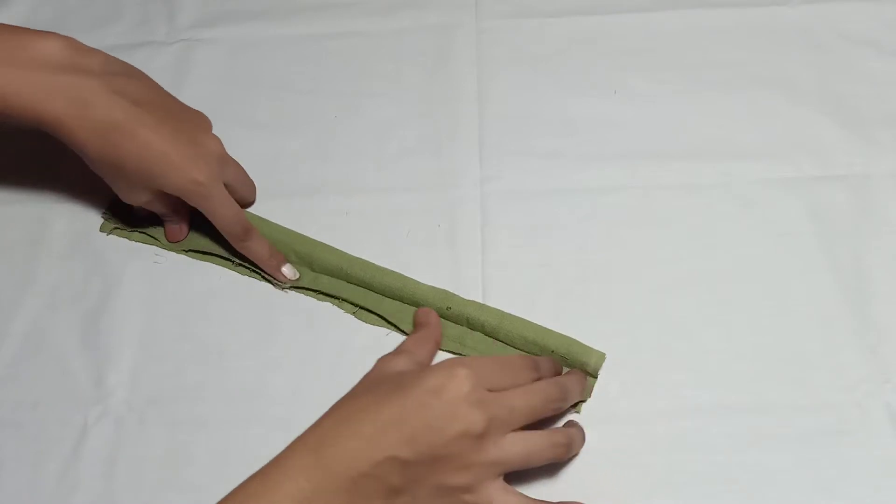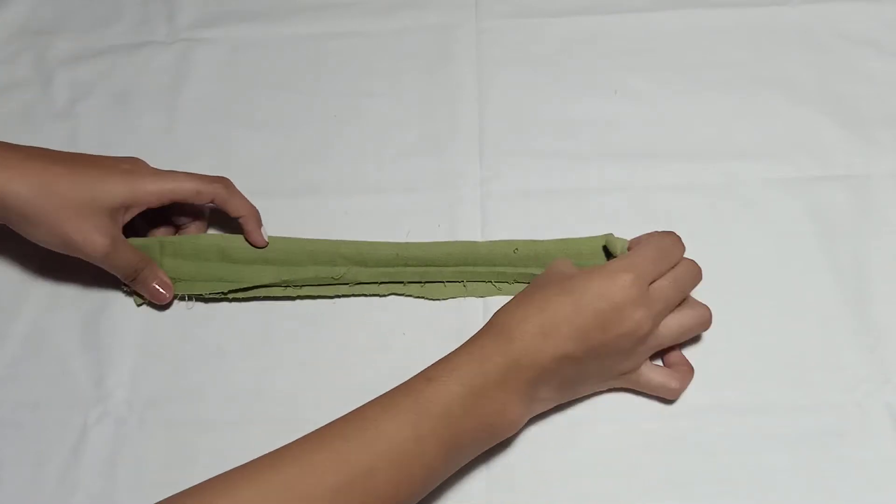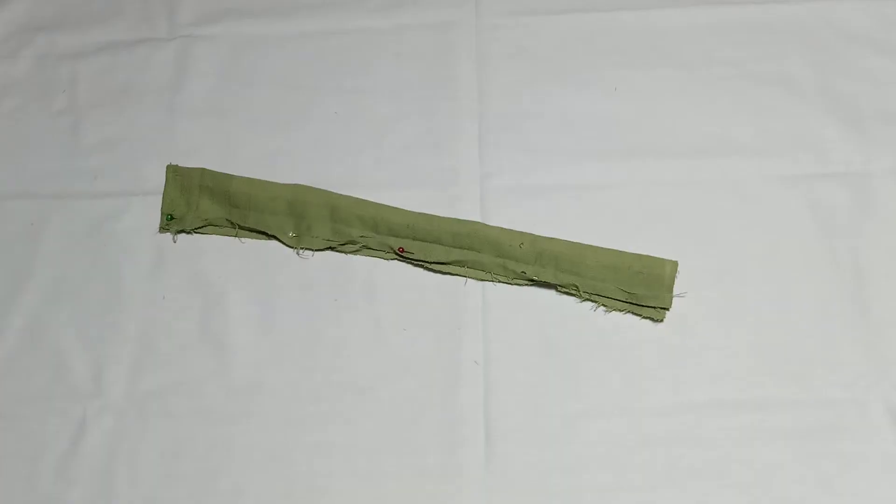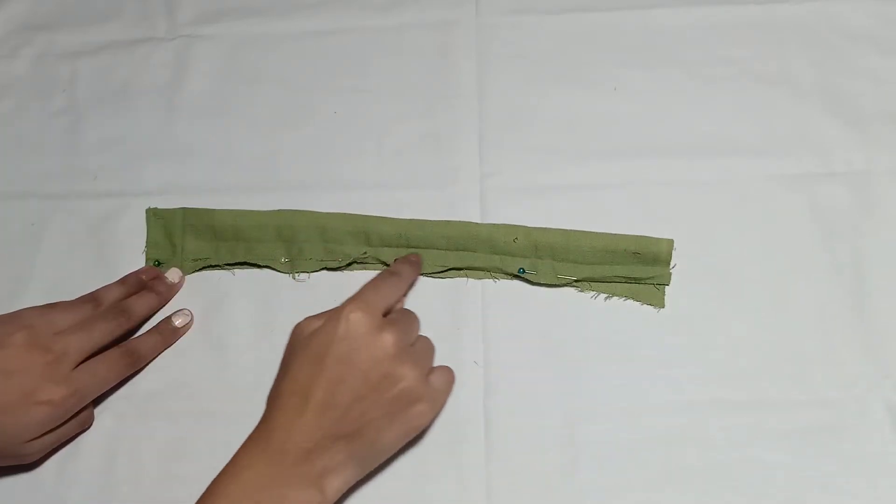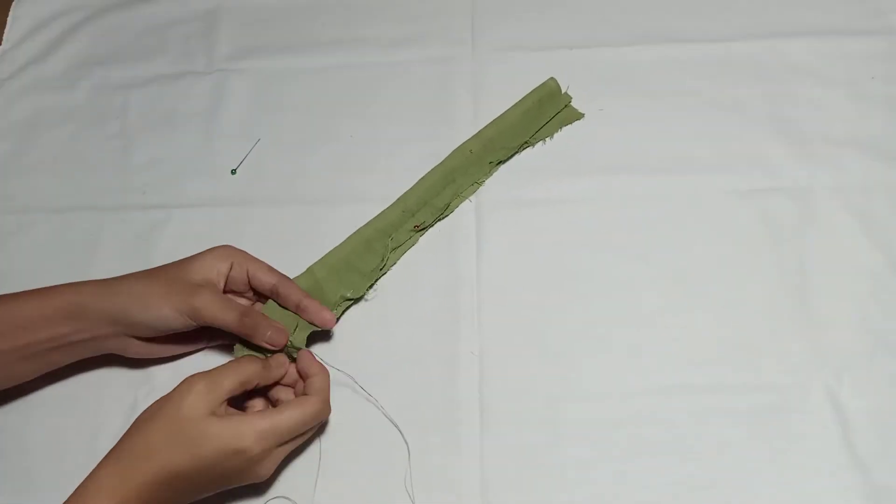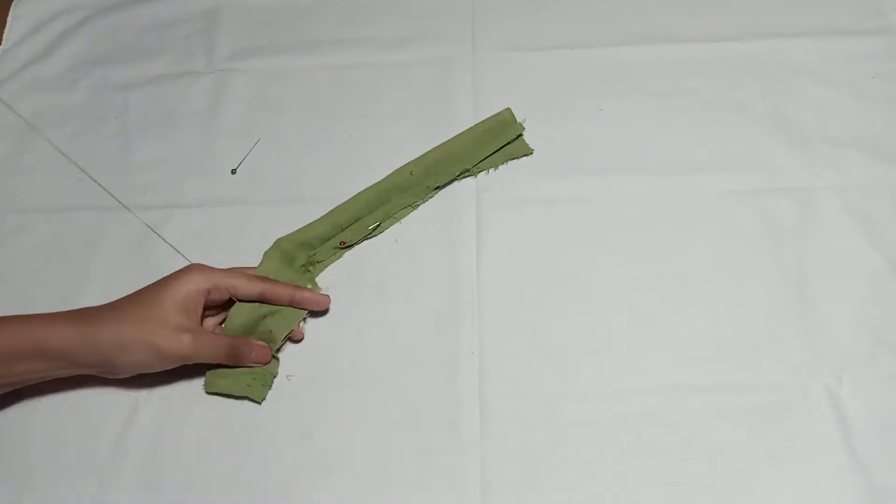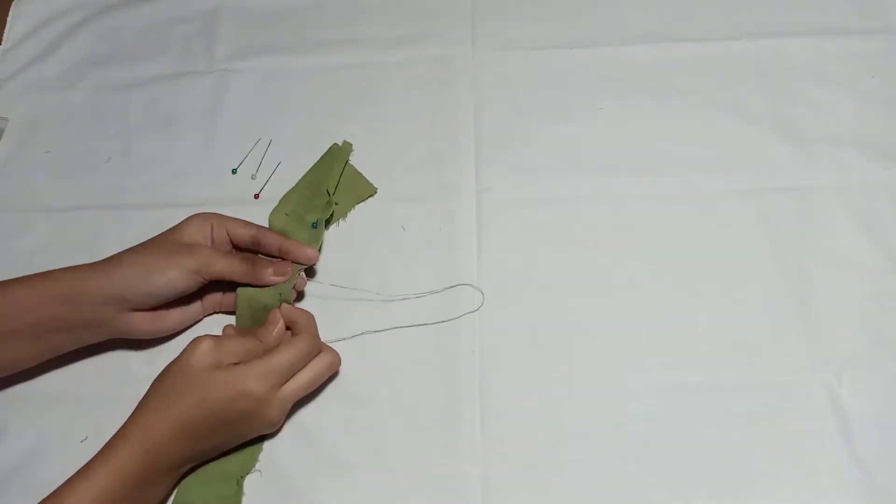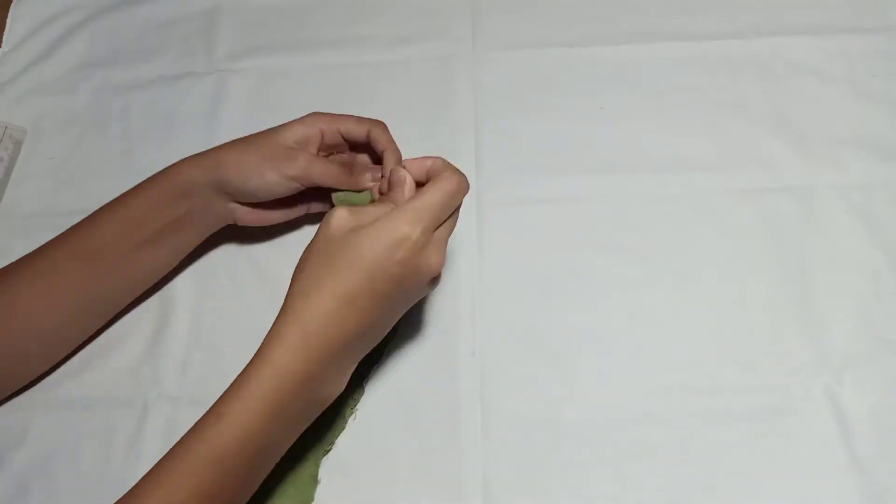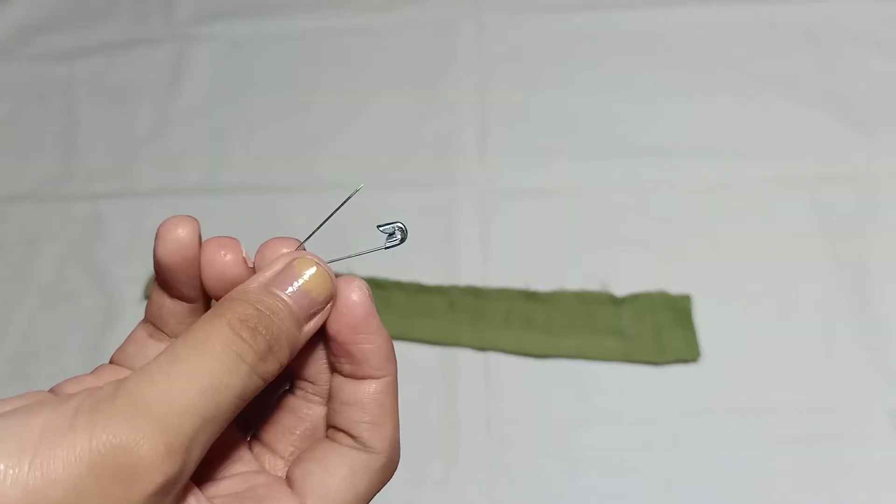After that, I folded it in half crosswise and pinned it. Then I sewed this part using either backstitch or running stitch. For those who don't know how to do basic stitches, just click the i-button above.